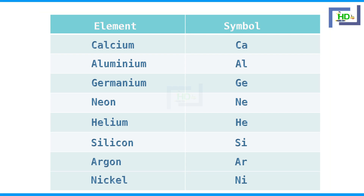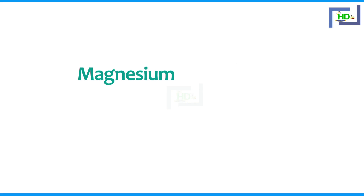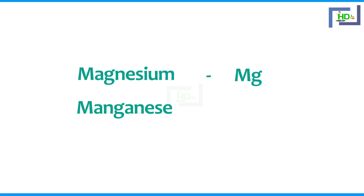For some elements, the symbols are taken based on sound. For example, magnesium is Mg, and manganese is Mn.